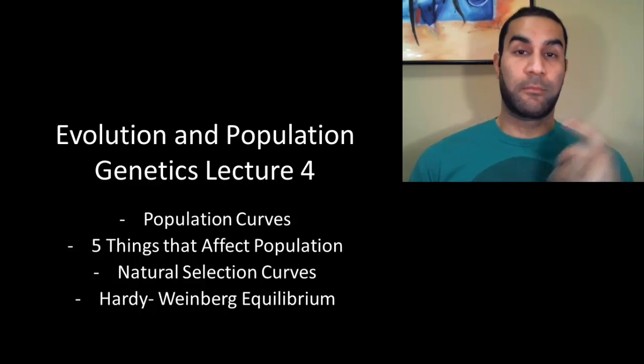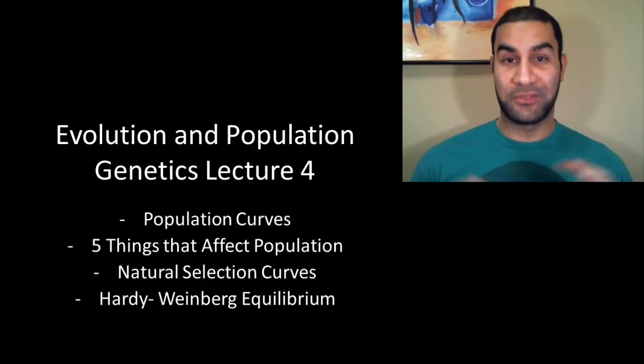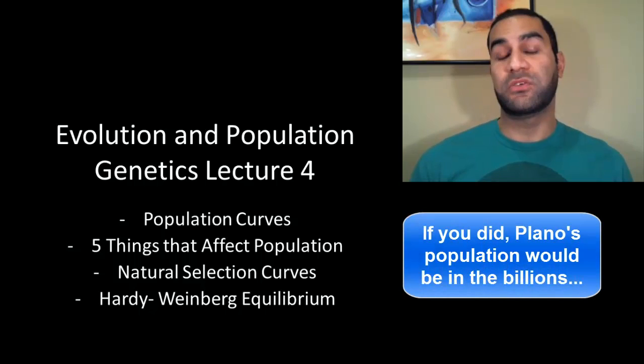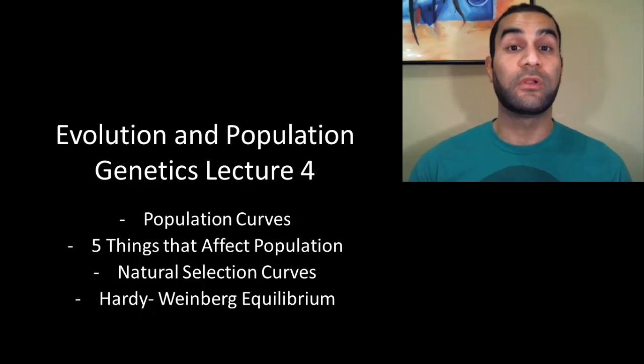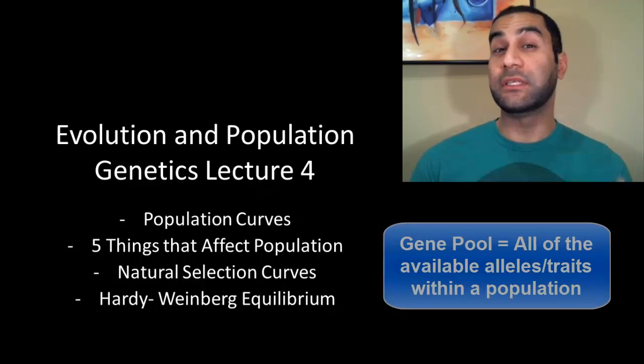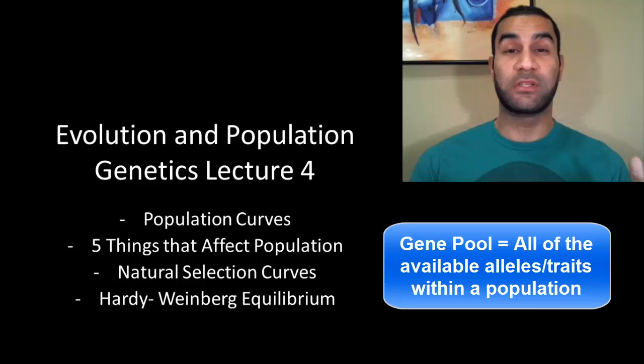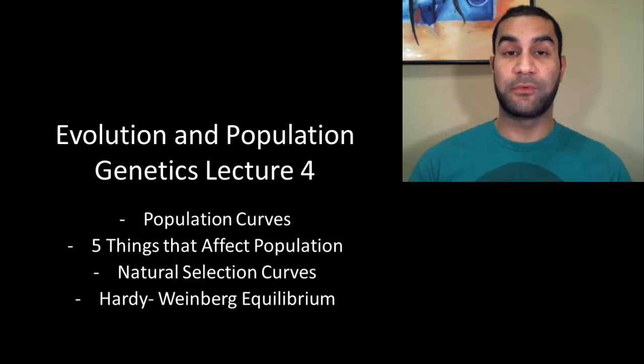If I ask for the population of Plano, you're not going to tell me how many birds, trees, blades of grass, insects, or rabbits — you're not adding all those different things together. When I ask for population, I'm talking about one particular species: the human population. All of these organisms can produce offspring together; they're all part of the same gene pool. Gene pool represents all of the different traits and alleles within a given group that can interbreed.